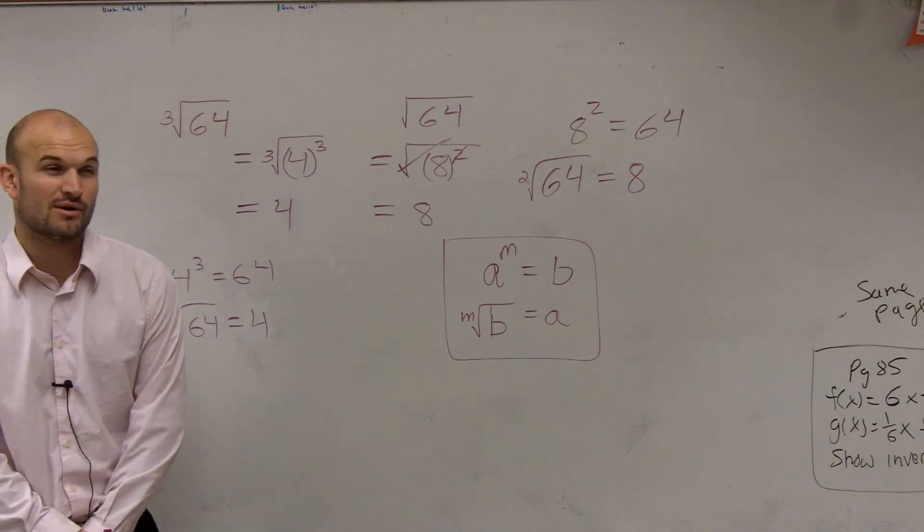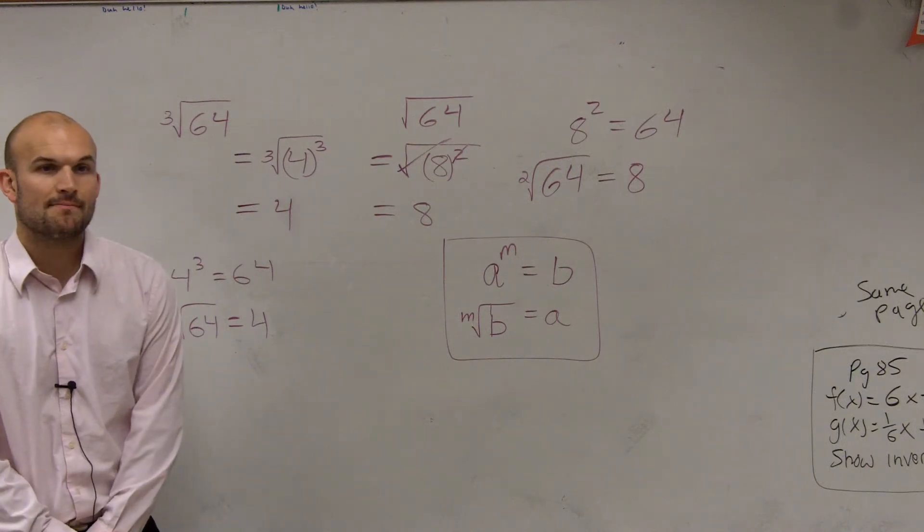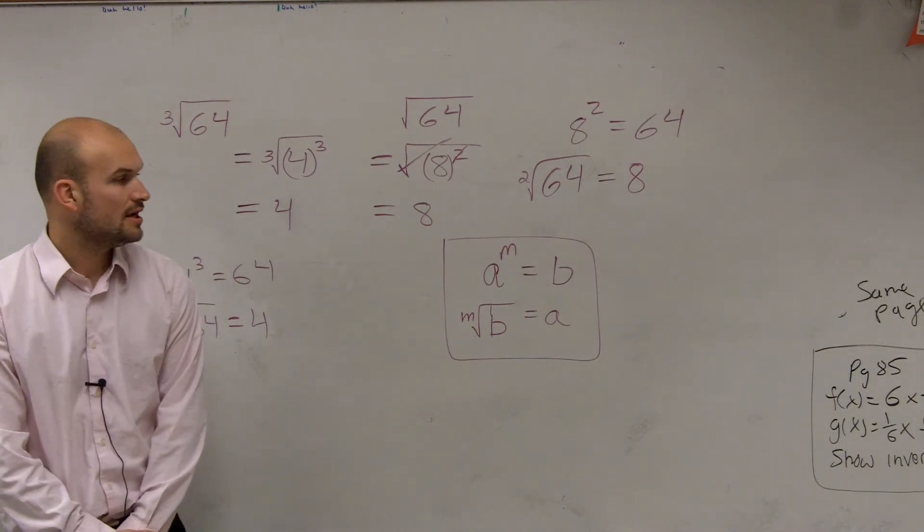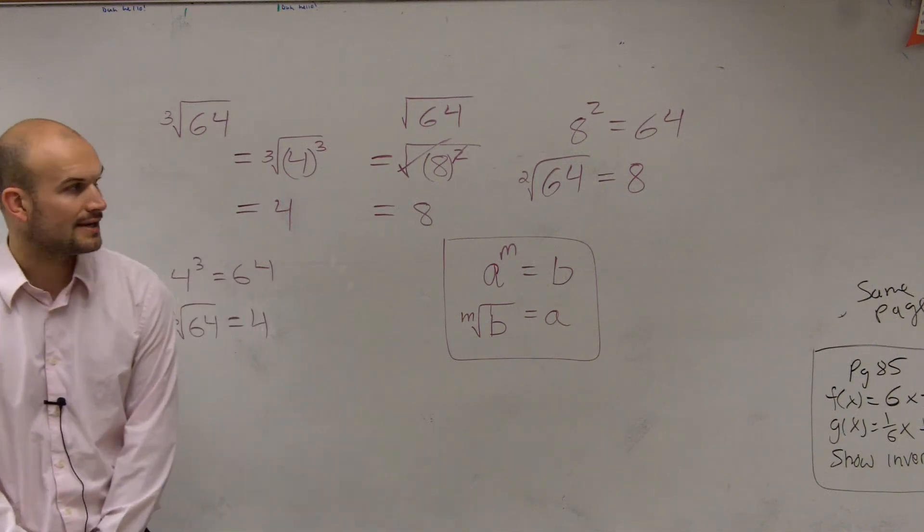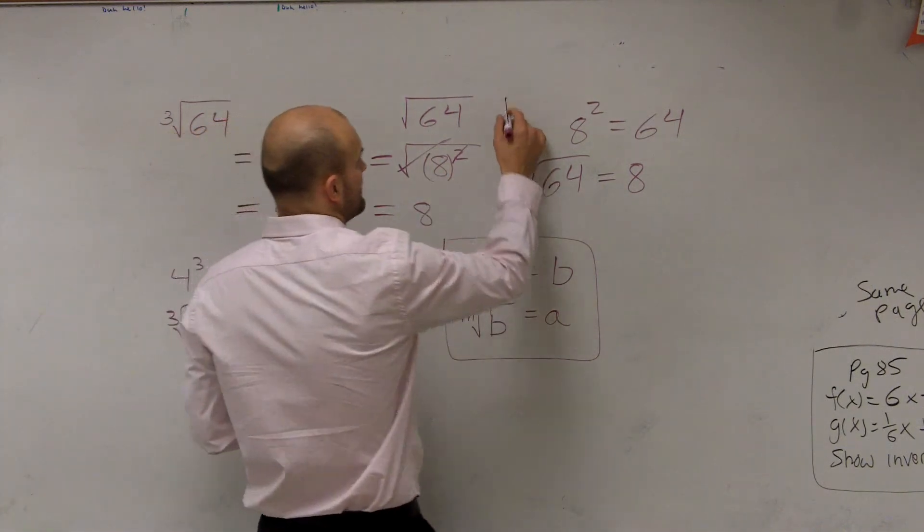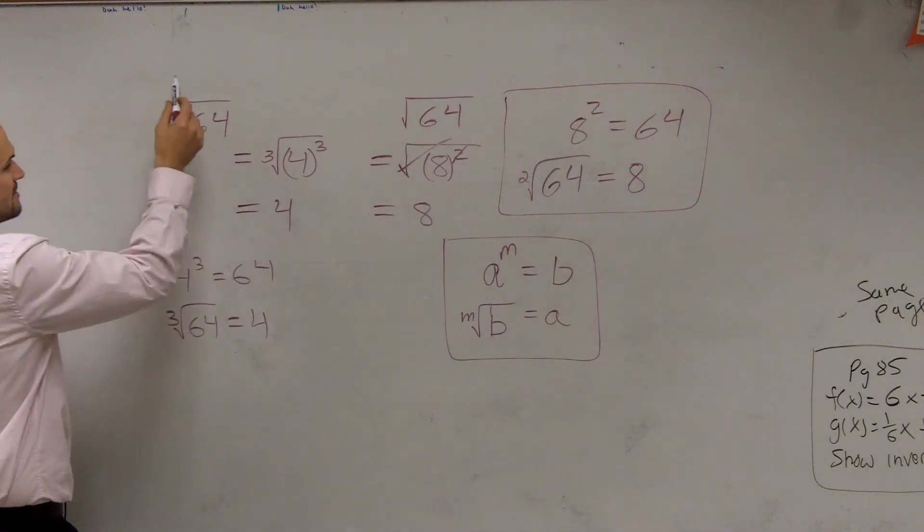Anybody have any questions on this? You're going to want to write that down. So a to the m power equals b, that means the m root of b equals a. And we can see we have two different examples of that, of squaring and of cubing.